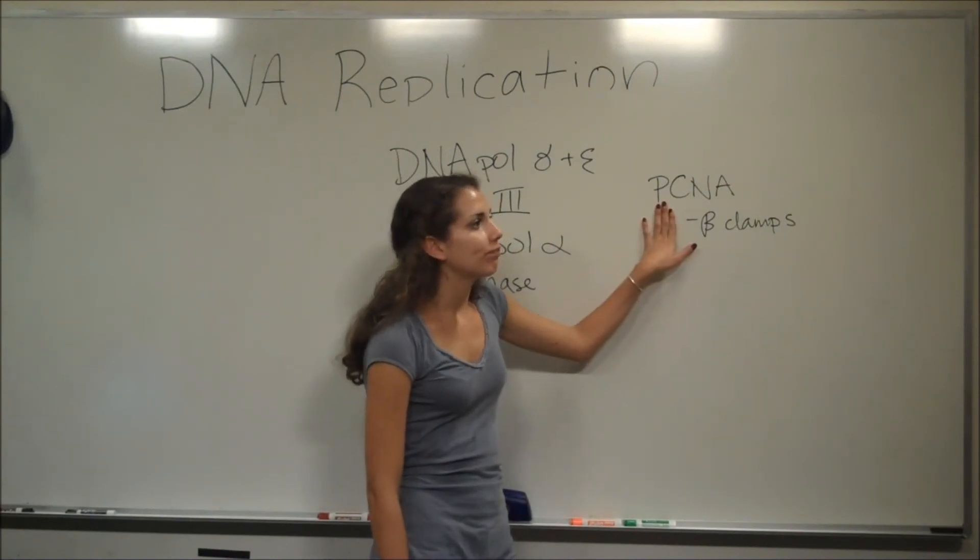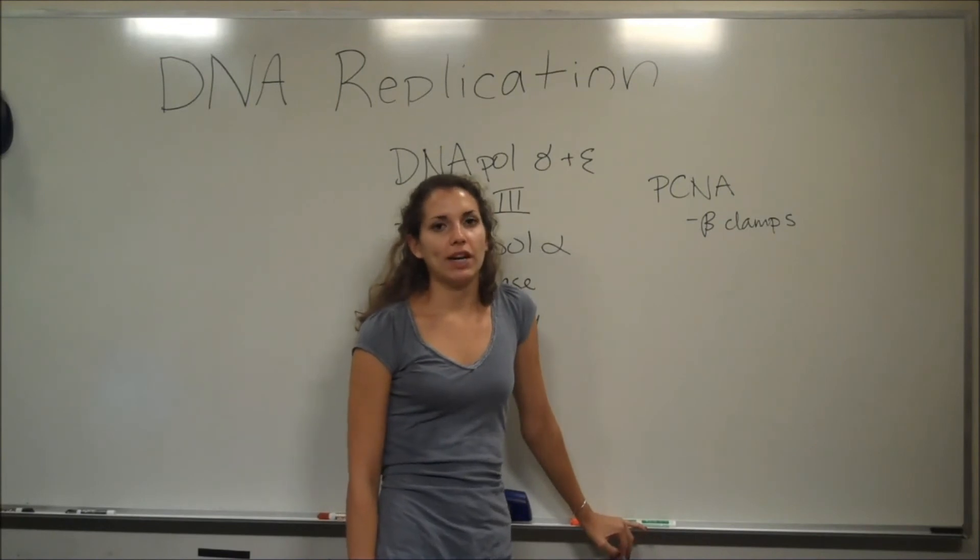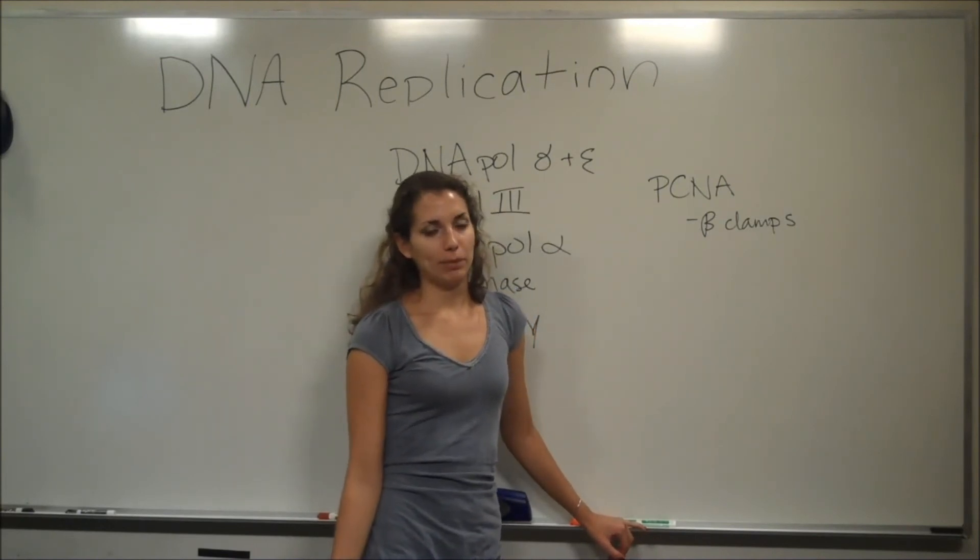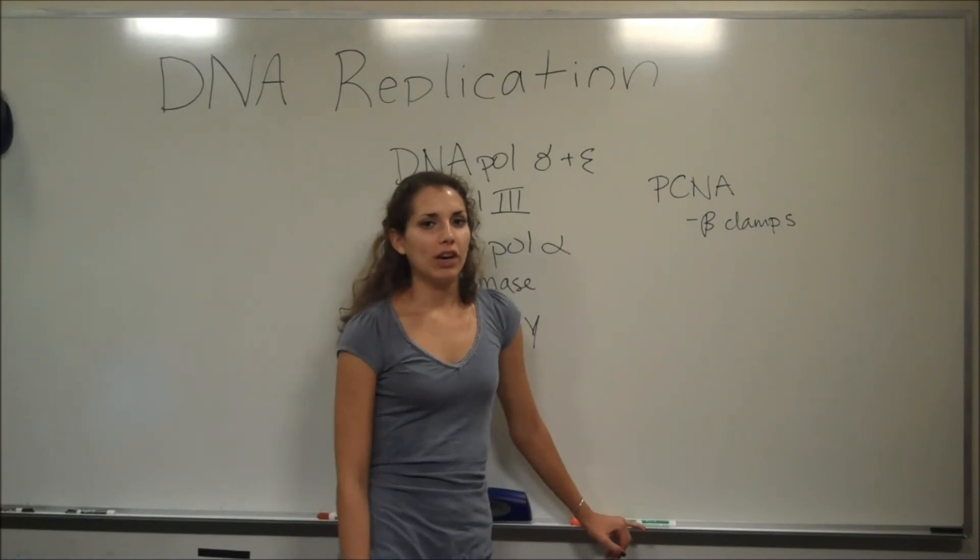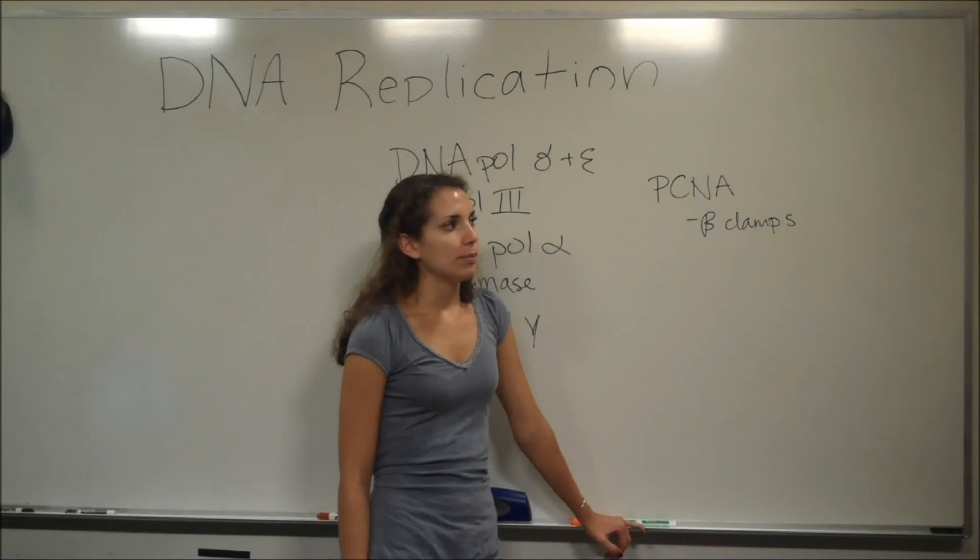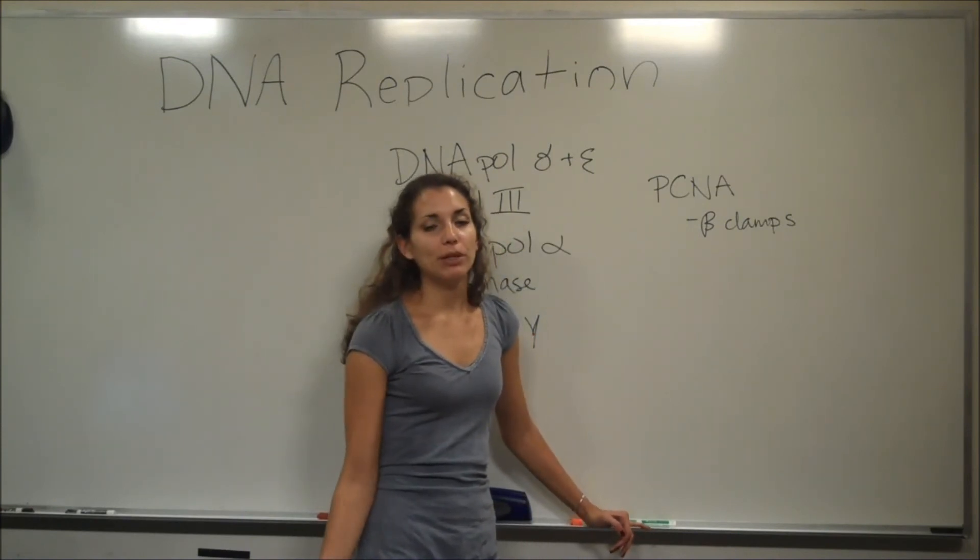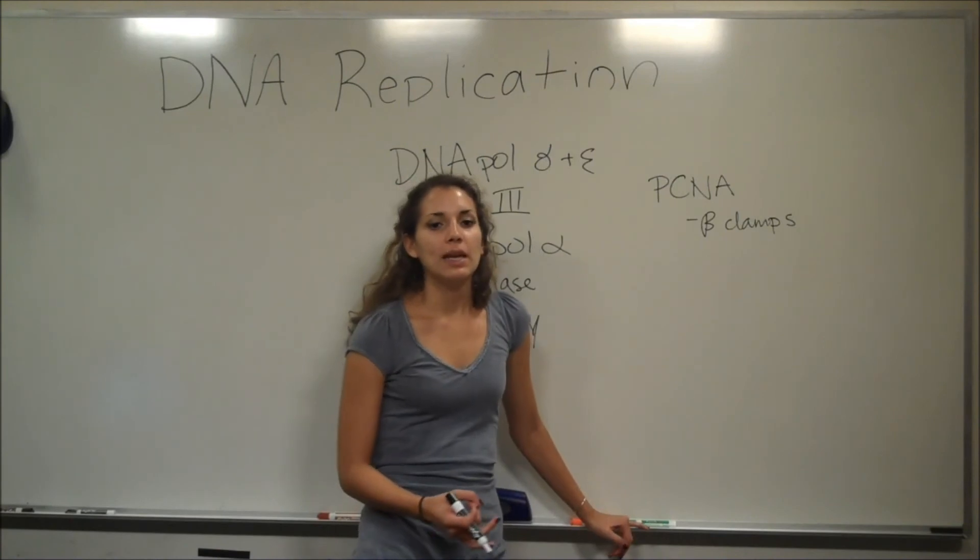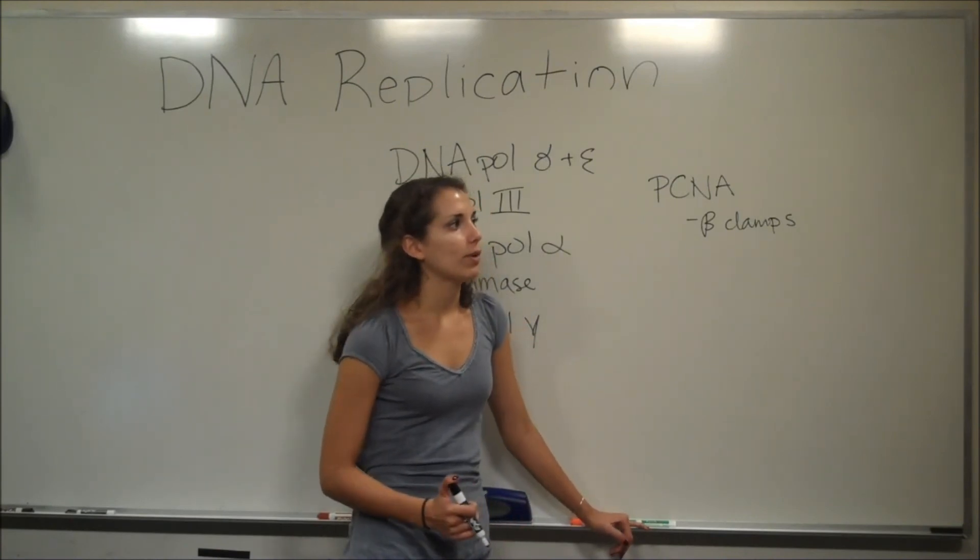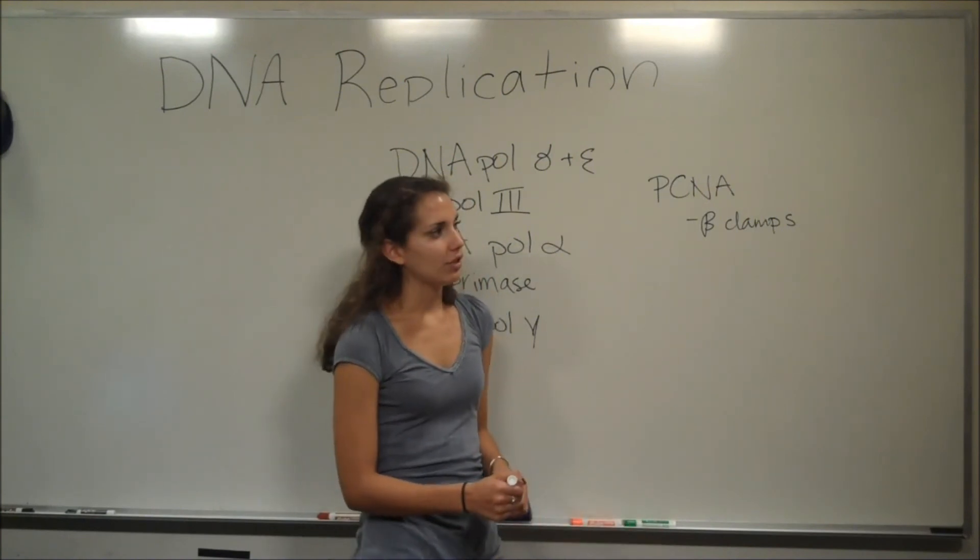And another important difference between eukaryotic and prokaryotic replication is, I mentioned that prokaryotes have the one origin of replication or oriC, but in eukaryotes there's actually multiple origins of replication. And this is important because the genome is much bigger, first of all, and the DNA polymerases move slower, actually, probably to reduce errors. So it's important that there's multiple origins of replication so it doesn't take forever to replicate this genome.